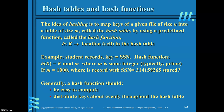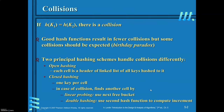Whenever you define a hash function, it must be easy to compute and distribute keys about evenly throughout the hash table. When you find the hash key value for k1 and k2, if both have the same key values, then a collision occurs. In order to avoid this, you can have two ways of organizing the keys: one is open hashing, the other is closed hashing.